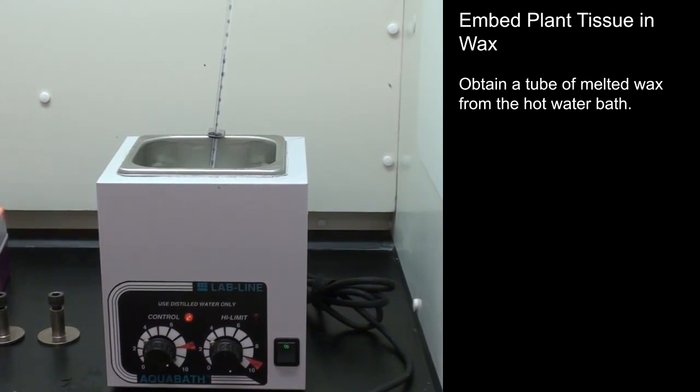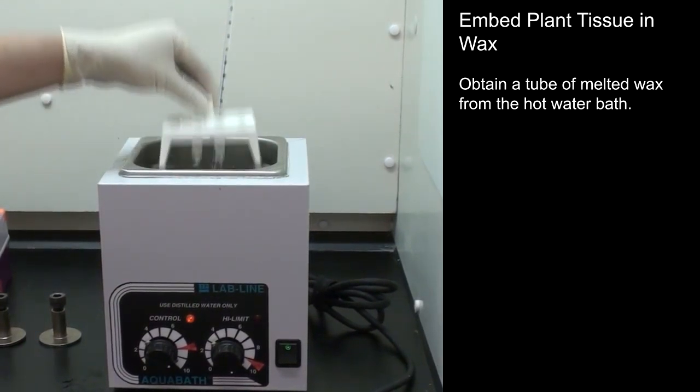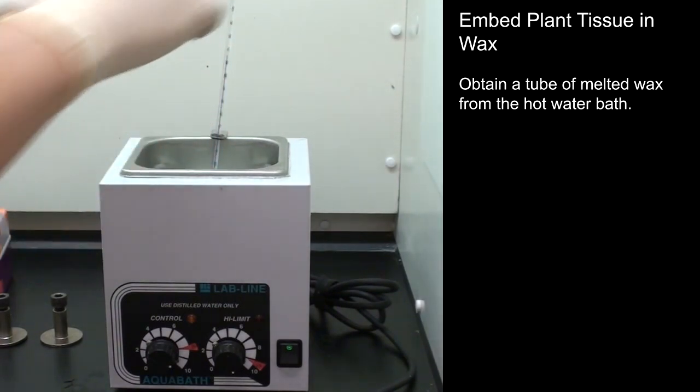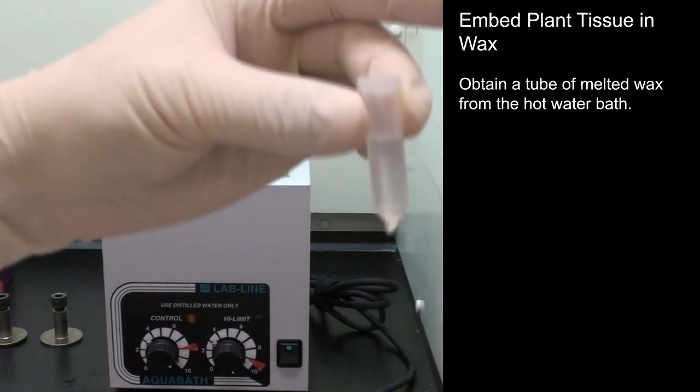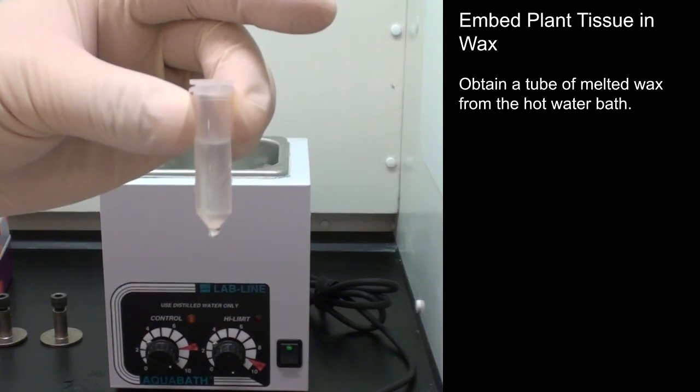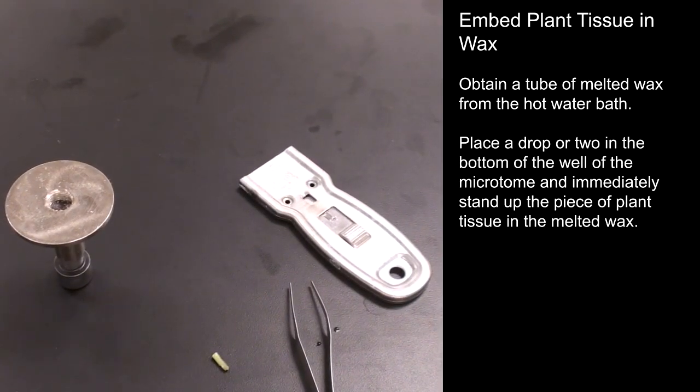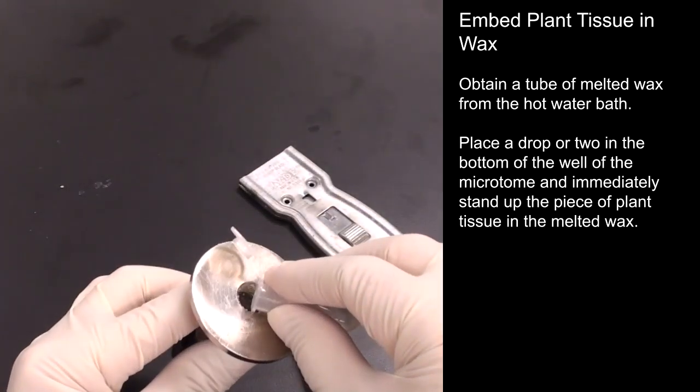Obtain a tube of melted wax from the hot water bath. Place a drop or two in the bottom of the well of the microtome and immediately stand up the piece of plant tissue in the melted wax.